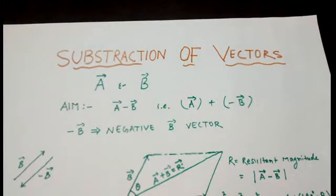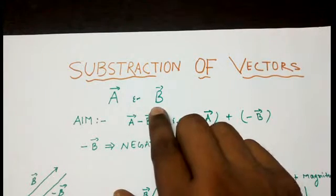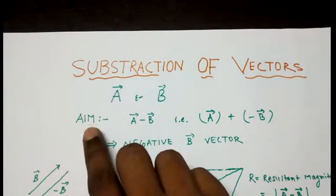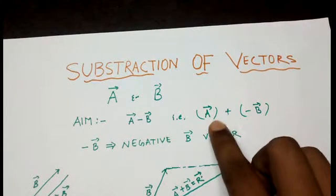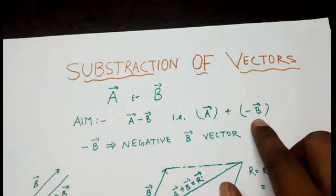The topic is subtraction of vectors. We have two vectors A and B, and we have to find out, that is, our aim is to find out A minus B. Now A minus B can be written like this: A in bracket plus minus B in bracket.